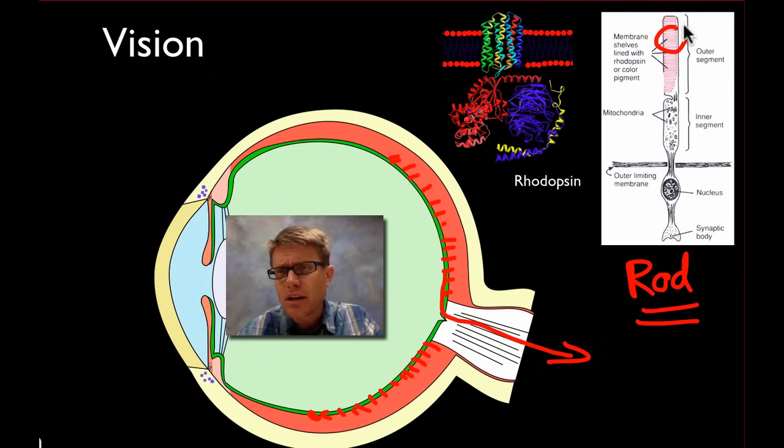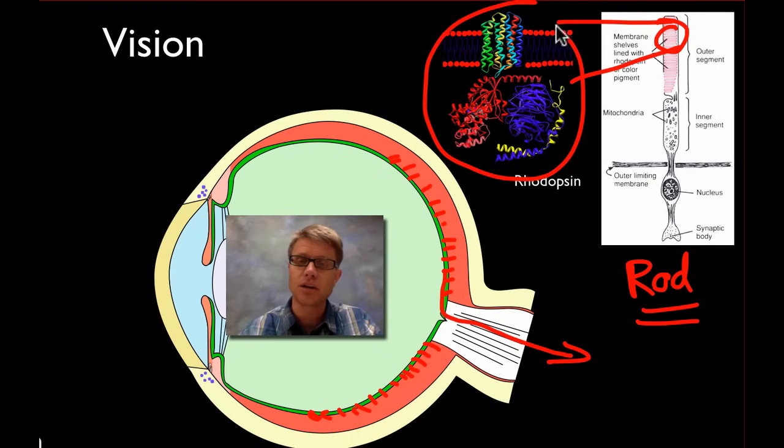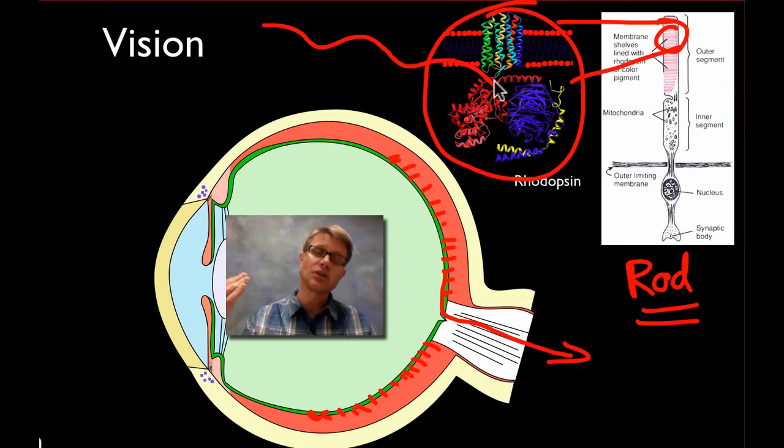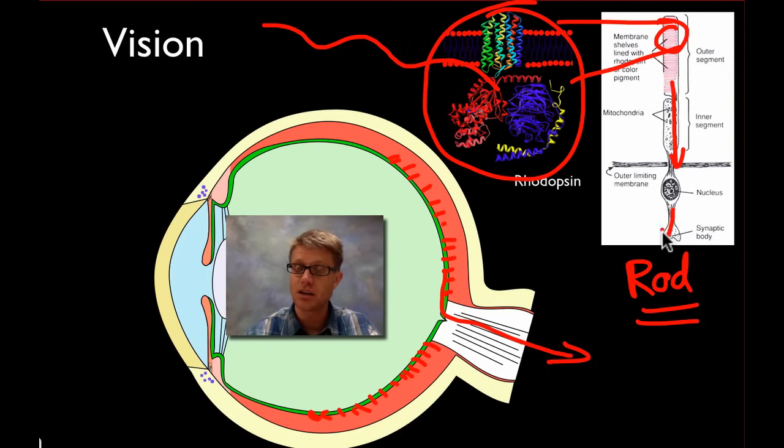If we zoom in right here to this area, we get a lipid bilayer. Then we have a chemical called rhodopsin. Rhodopsin is going to pick up light. When light hits that, when light hits rhodopsin, it's going to have a conformational change in the protein. The protein will actually change shape. The rhodopsin is going to change its conformation. When it changes its shape that's going to send an action potential down here. It's going to send an action potential down a nerve and it's going to eventually go to your brain.